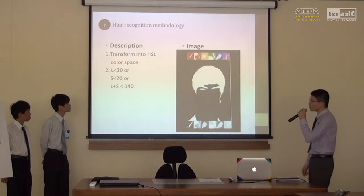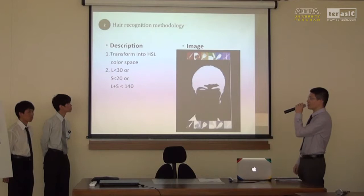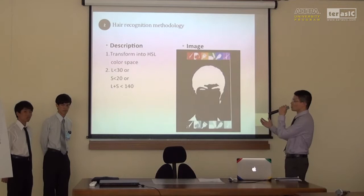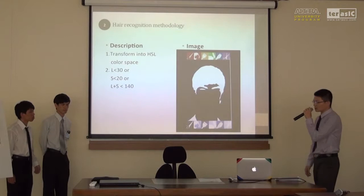Next, our job is looking for hair. Hair detection first transforms RGB into HSL color space. After that, we apply constraints on judging which pixels are hair and which are not. For example, a smaller lightness value represents darkness, and a smaller saturation value means the color is close to gray.